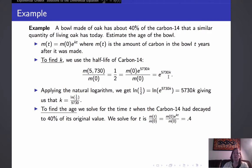So to find the age, we solve for the time t, when the carbon-14 has decayed to 40% of its original value. So we need to express that in a mathematical equation. So we need to solve for t when m of t divided by m of 0 is 0.4. And of course m of t is going to be m0 times e to the kt. So the m0s will cancel, and our equation we have to solve for t in is e to the kt equals 0.4.